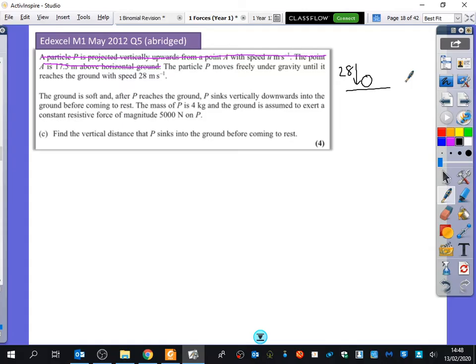So I'm just going to tell you we don't need this for this question. We would have used it for part A and part B. But all we're being told now is they're a particle and it's moving towards the ground and it's hitting the ground at 28 metres. The ground is soft. And after P reaches the ground, P sinks vertically downwards into the ground before coming to rest. The mass of P is 4 kilograms and the ground is assumed to exert a constant resistive force of magnitude 5,000 newtons on P. So this is a weird kind of question that's happening here.